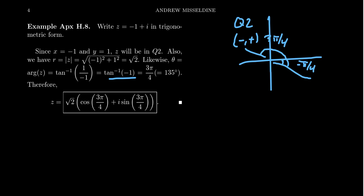And therefore, the trigonometric form of this complex number will be, it always has the form r times cosine theta plus i sine theta.